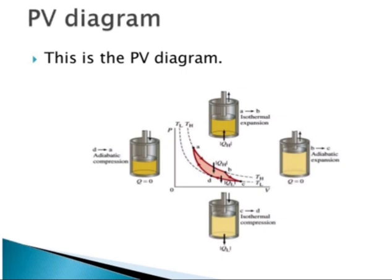The four steps are A to B, B to C, C to D, and D to A. From A to B there is isothermal expansion — this arrow shows expansion. From B to C there is adiabatic expansion, from C to D there is isothermal compression, and from D to A there is adiabatic compression. The temperature is higher at the upper side and lower at the lower side of the diagram.